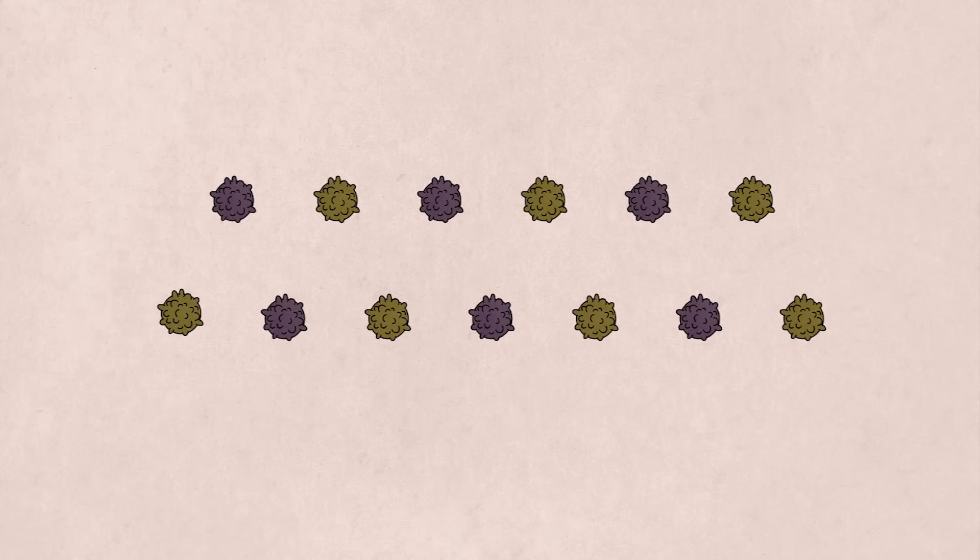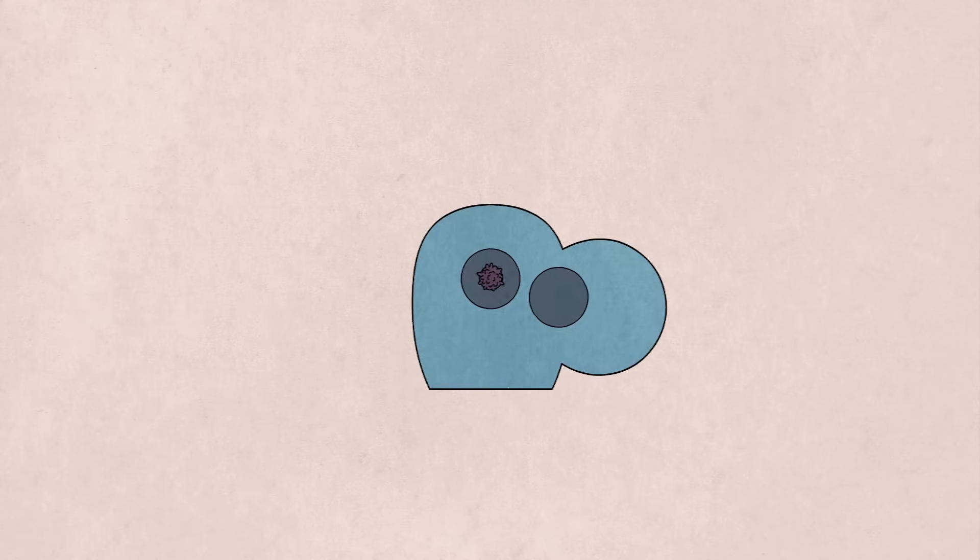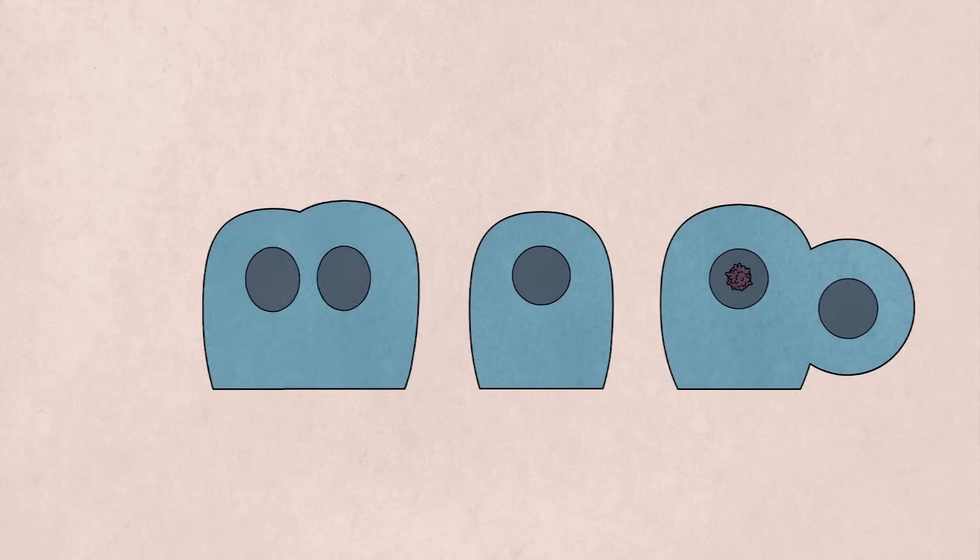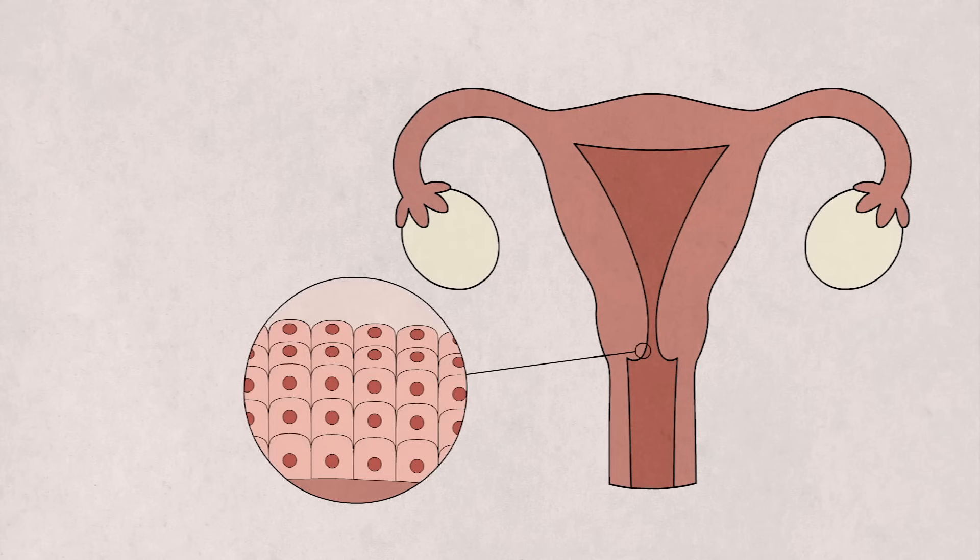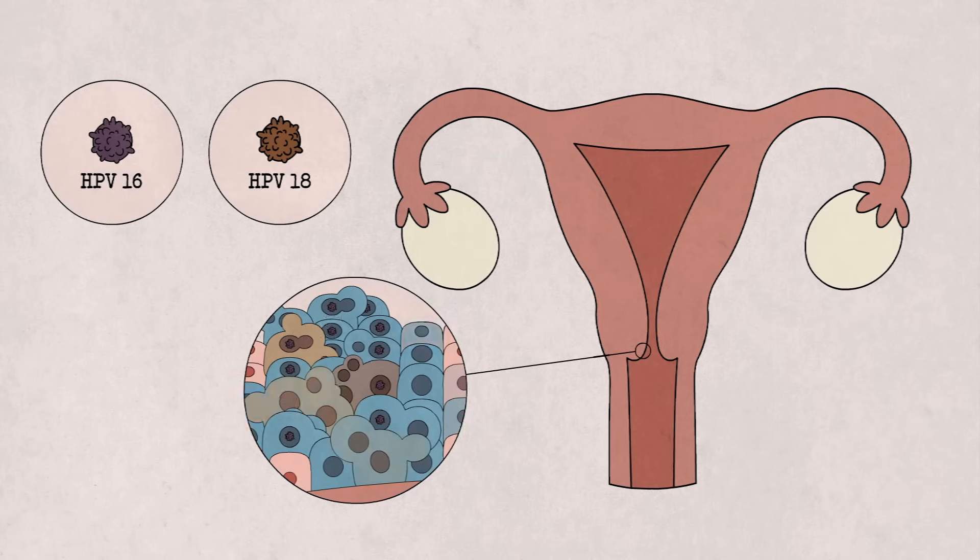But another 13 strains can cause DNA mutations that cause cells to divide at a much faster pace than normal, propelling the development of cancerous growths. The cells of the cervix are especially at risk. Two in particular, HPV-16 and 18, are responsible for the majority of cases of cervical cancer, which is now the fourth most common type of cancer in women.